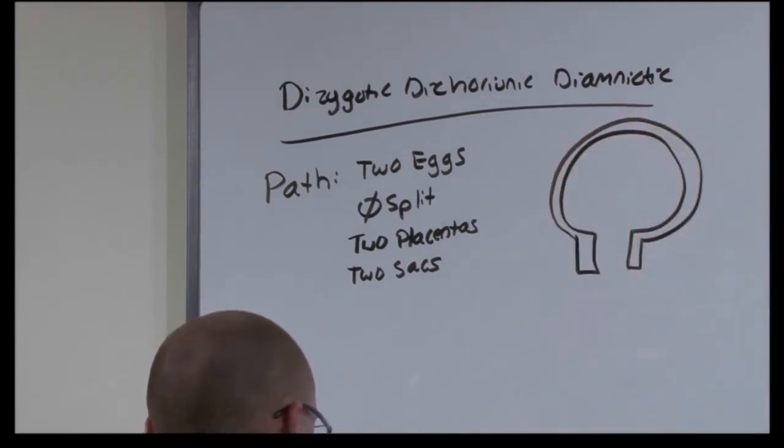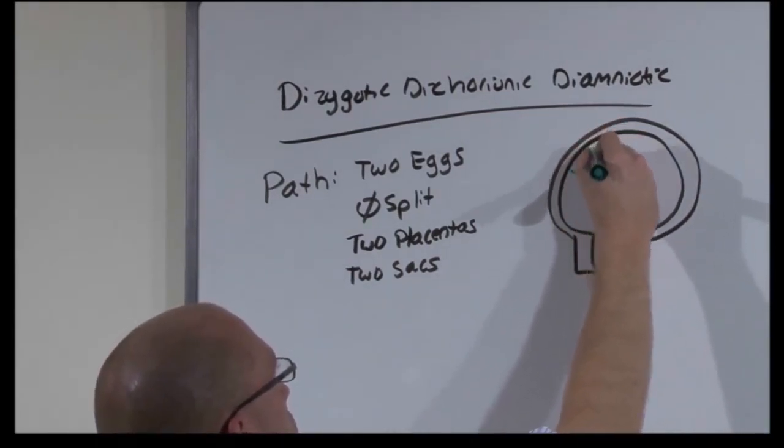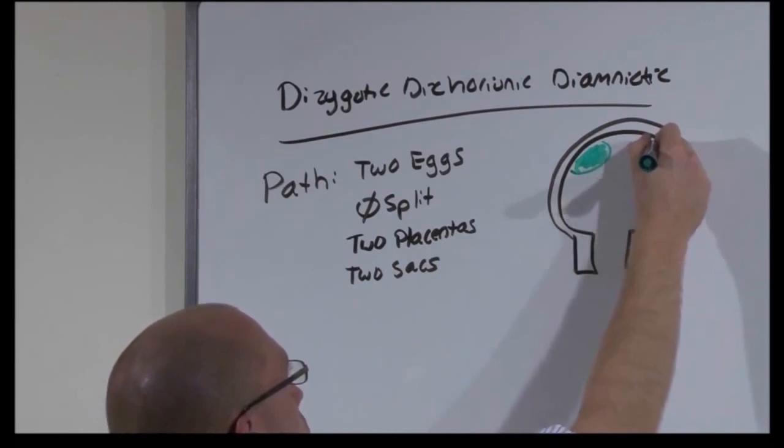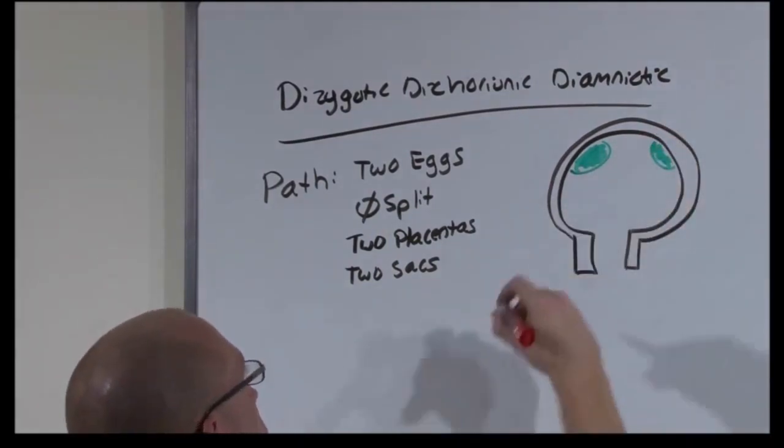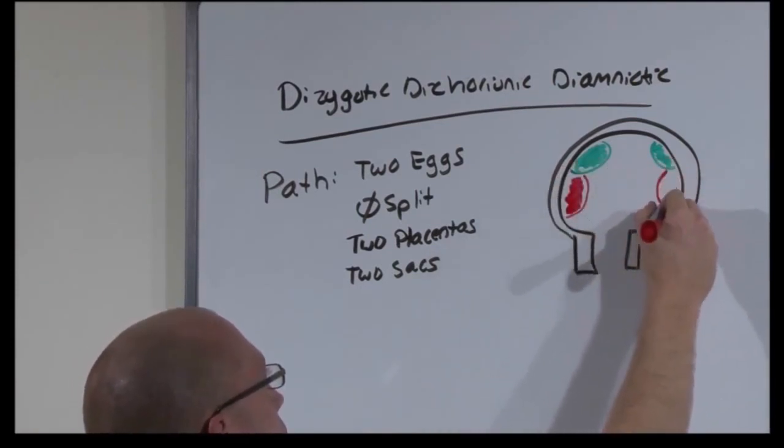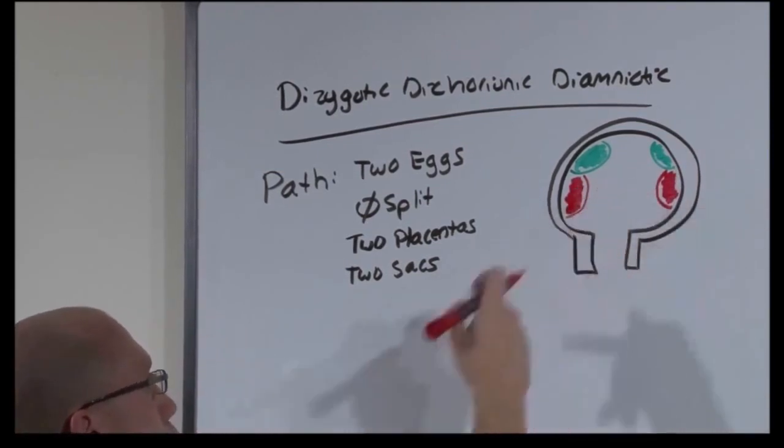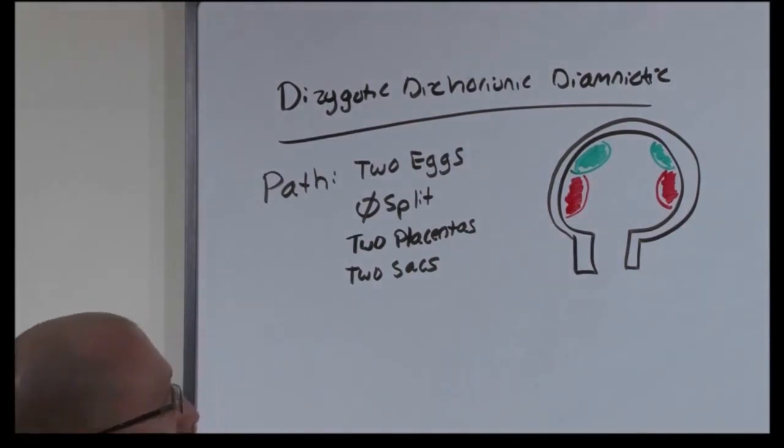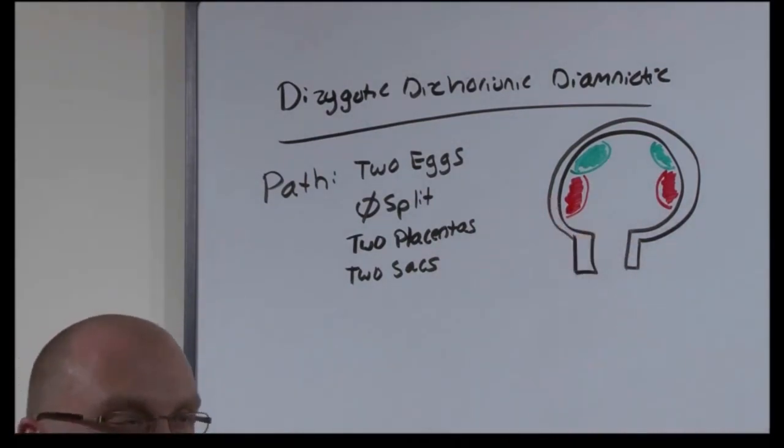Here's a uterus. Here is the placenta of one fetus, placenta of another. Here is the developing fetus, the sac, inside the sac. Here is the other developing fetus inside the sac. You can see that they are completely separate from one another. So the only thing that happens is that they can get in each other's way, physically.